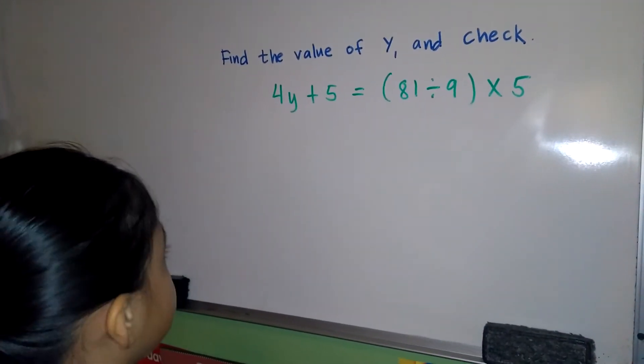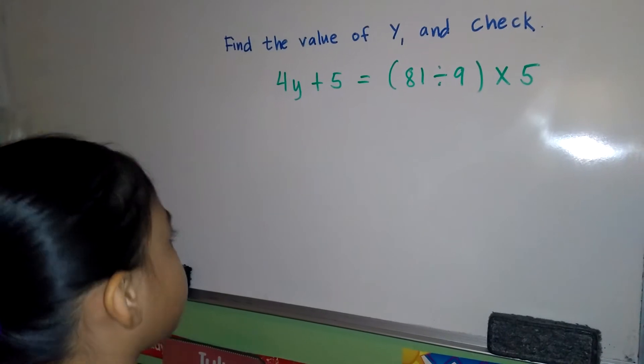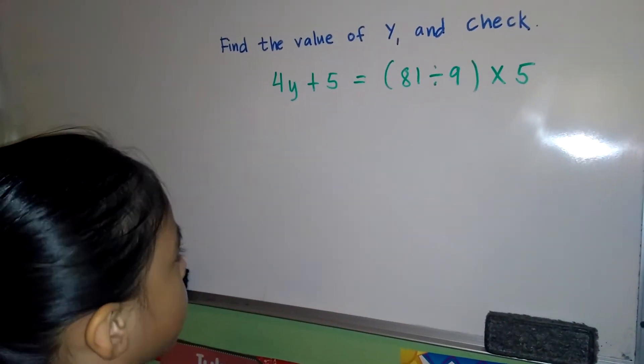Find the value of y and check: 4y plus 5 equals 81 divided by 9 times 5.